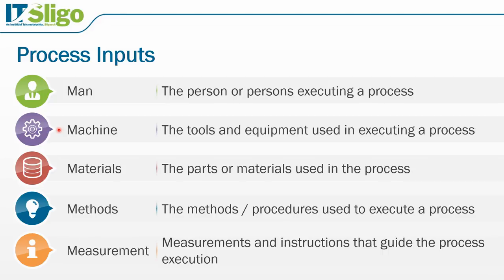The machine could be the tools and equipment, i.e. the golf club. Materials are the parts or materials, which you could argue is the golf ball or the putting surface. The method is the technique that the golfer uses. And then there's measurement — how it's measured and the instructions that guide that process execution.